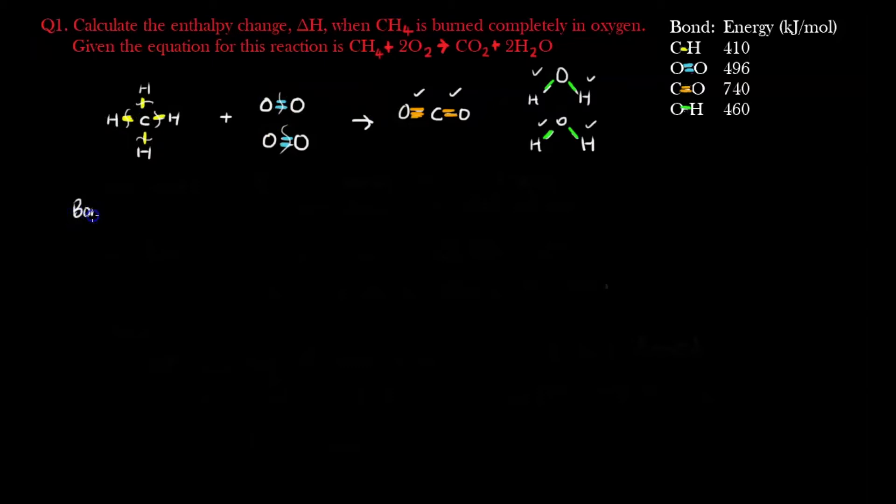So now we can finally do the calculation. First one we're going to write, bonds broken, which is talking about the reactants. Bonds broken, we have 4 CH bonds in CH4, and this one sums up to 4 times 410 kJ per mole.